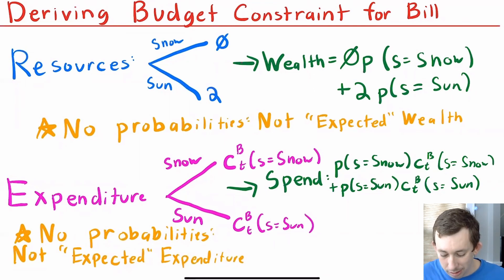So his expenditure is also not going to be probabilistic. So he's going to buy some snowy coconuts or some frozen coconuts. So we'll call that c_i^B of the state of nature being equal to snow. He's going to buy some dry coconuts or some coconuts where the state of the world is sunny.